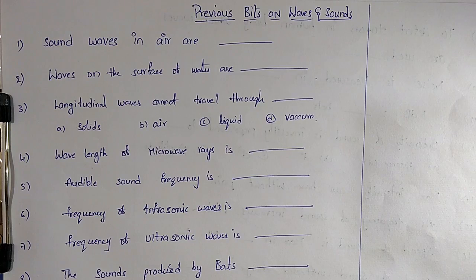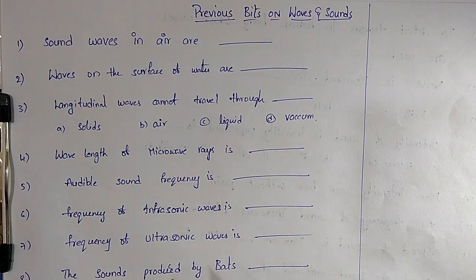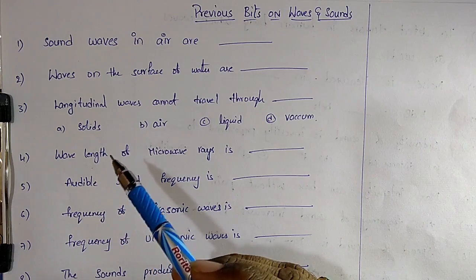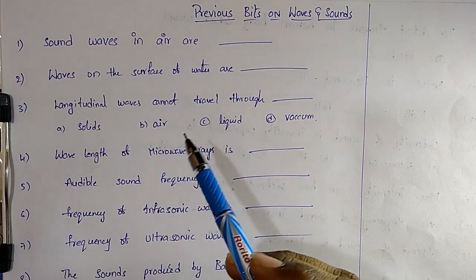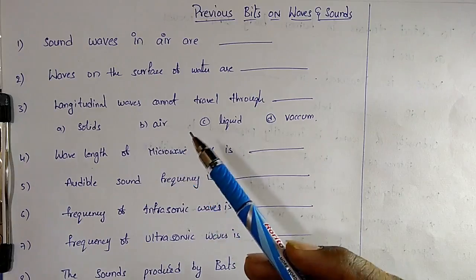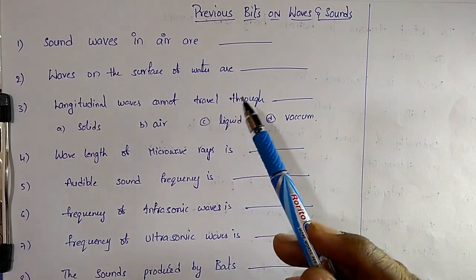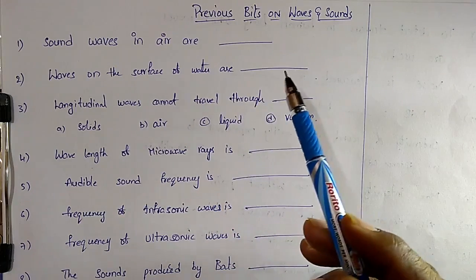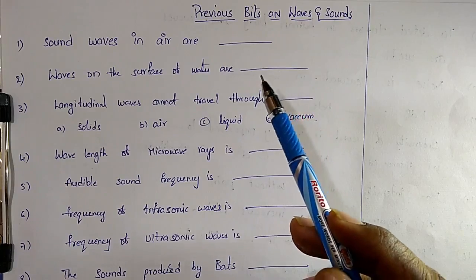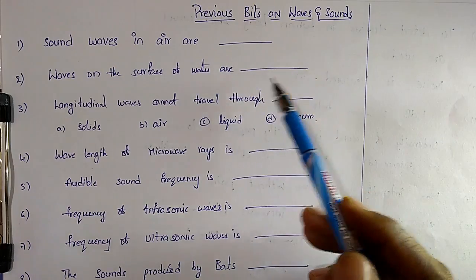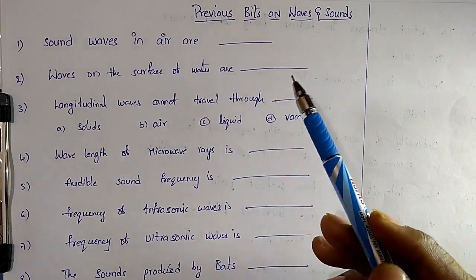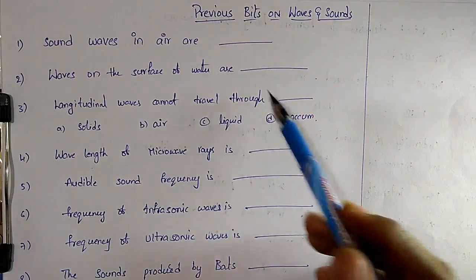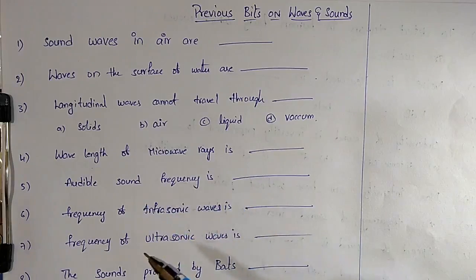Hi friends, welcome to Sunil Engineering Academy RRB JE Physics classes. We have already completed physics theory classes 1 to 6, and in class 6 we completed the concept of waves and sounds. First, watch class 6 to get a clear idea, then watch this previous bits class.